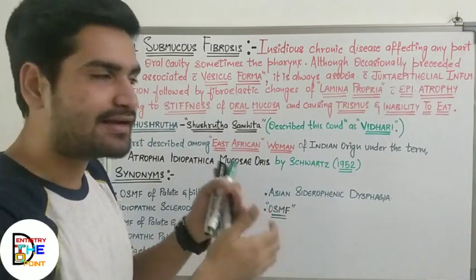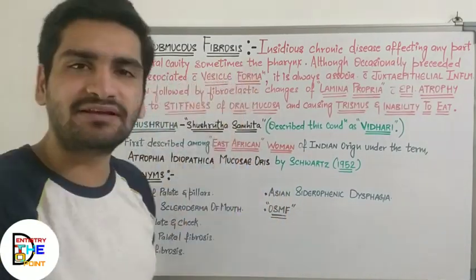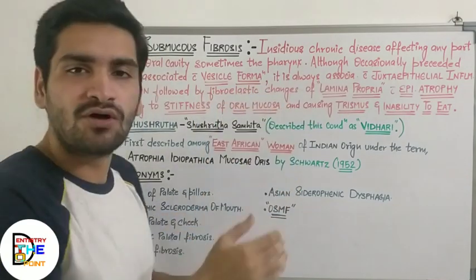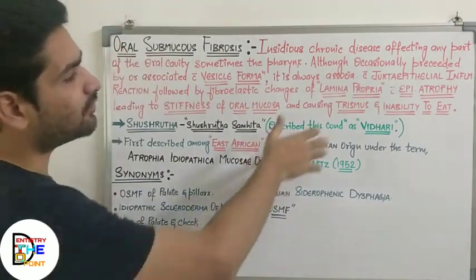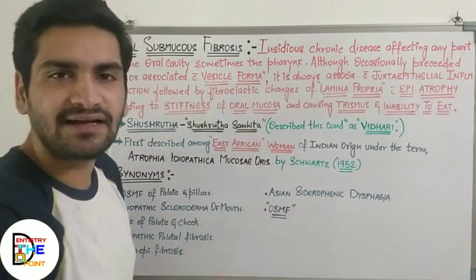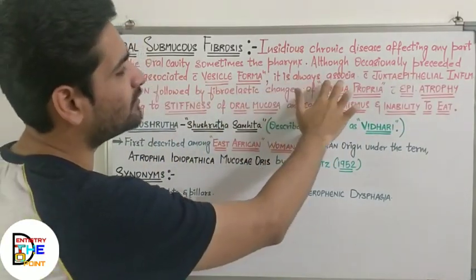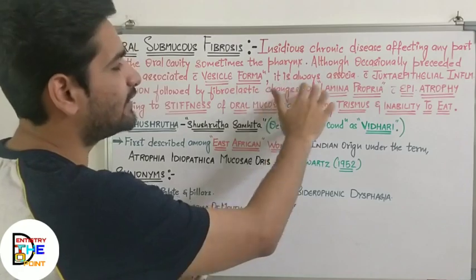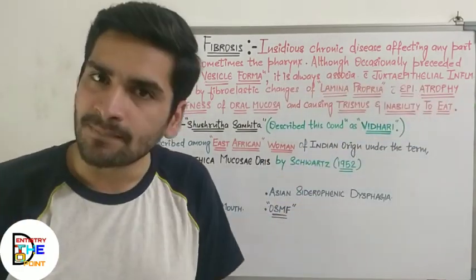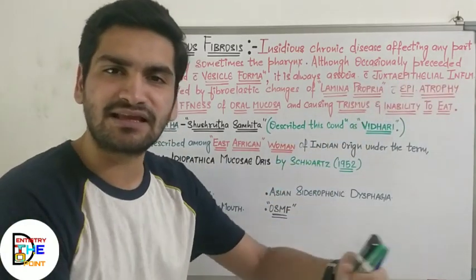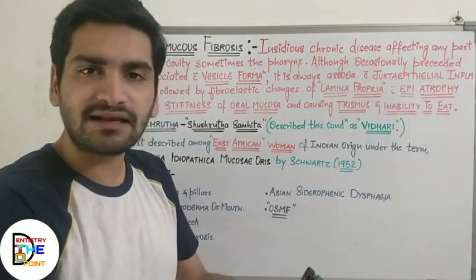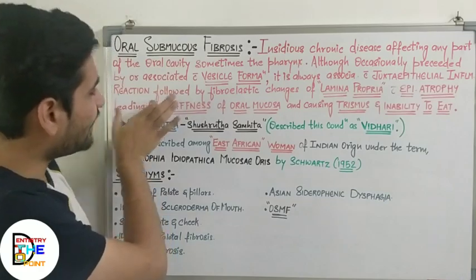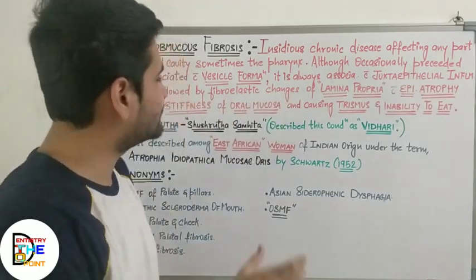Next: although occasionally preceded by or associated with vesicle formation. Before or during this disease, the patient is going to show vesicle formation in the oral cavity. It is always — not occasionally — associated with juxta-epithelial inflammation. The term 'juxta-epithelial' means something nearer to the epithelium; just past the epithelial layer you will always see inflammation.